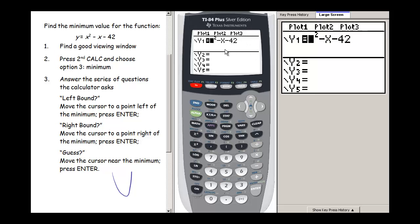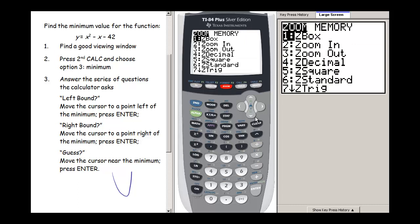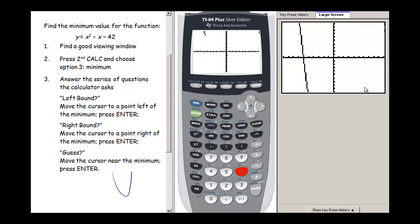Let's try using one of our presets and see if we can get a window that works. So if we press zoom and then standard, choose option 6, we can see part of our parabola but I can't see way down here where my minimum is.